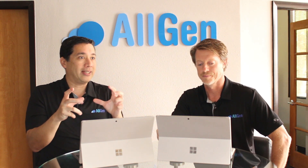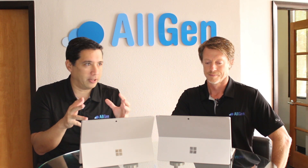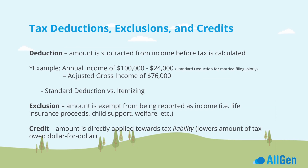It's also important to understand tax deductions, exclusions, and credits. A tax deduction is the amount subtracted from income before tax is calculated. For example, if you have annual income of $100,000 and there's a $24,000 standard deduction for married filing jointly, your adjusted gross income becomes $76,000 — and that's the new number from which the tax rate is calculated.